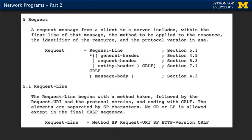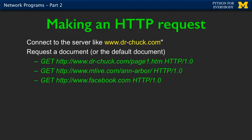RFC 2616 tells you about the HTTP protocol. If you're writing a browser, you'd read the HTTP protocol — hundreds of pages. Paging through it, you find the section describing the syntax of a request from the client to the server: the first line includes the method, the resource, and the protocol version in use. For example: GET (capital letters) followed by a space, then a URL, then the protocol. You connect and then send that line — that's a request for a document.